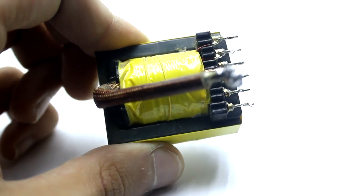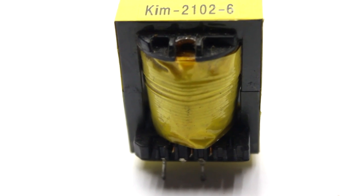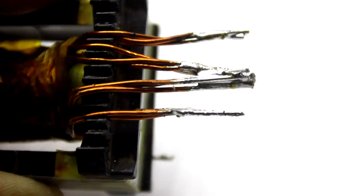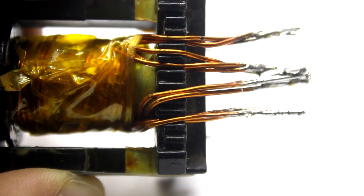The transformer is taken from a computer power supply of 450 watts. All original windings removed. The new primary winding contains two to three or two to five turns. Wound by a bundle of three wires, each is 1 millimeter.